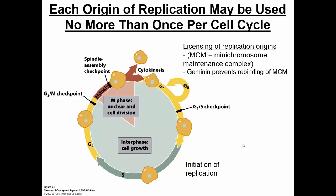We have to make sure that each replication bubble only replicates once per cell cycle — you can't have some DNA replicating two or three times while another segment replicates once or not at all. To deal with this, something called licensing happens. Just like buying computer software licenses — one per computer — each replication origin is licensed once per cell cycle by a protein complex called MCM, or mini chromosome maintenance complex. Before MCM can re-license the same site, a protein called geminin binds to MCM and prevents it from doing so.